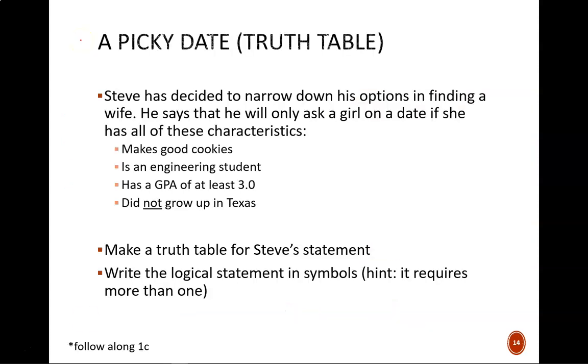Alright, one more example. Steve has decided to narrow down his options in finding a wife. He says that he will only ask a girl on a date if she has all of these characteristics: makes good cookies, is an engineering student, has a GPA of at least 3.0, and did not grow up in Texas. Pause the video and try this yourself, including an attempt at an algebraic representation.